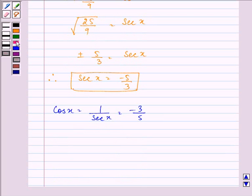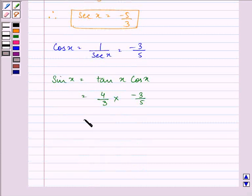Proceeding further, we know that sin x is equal to tan x cos x. So we have the value of tan x as 4 by 3, cos x as minus 3 by 5, and hence its value comes out to be minus 4 by 5. Cosec x comes out to be minus 5 by 4.